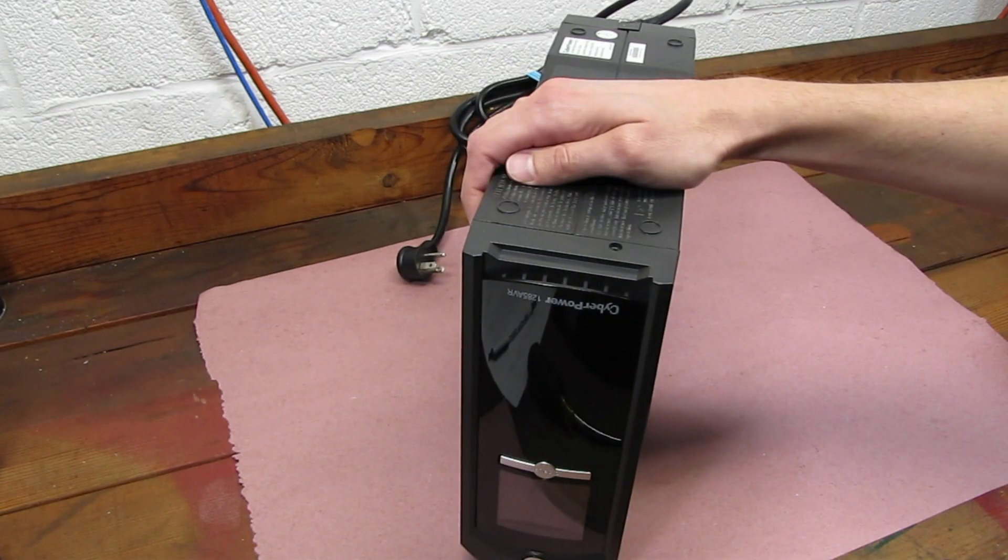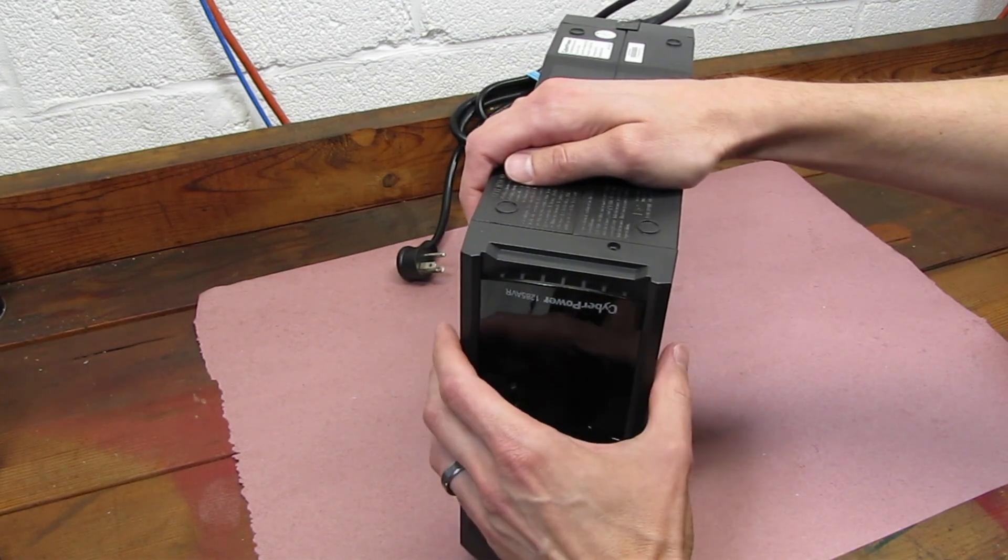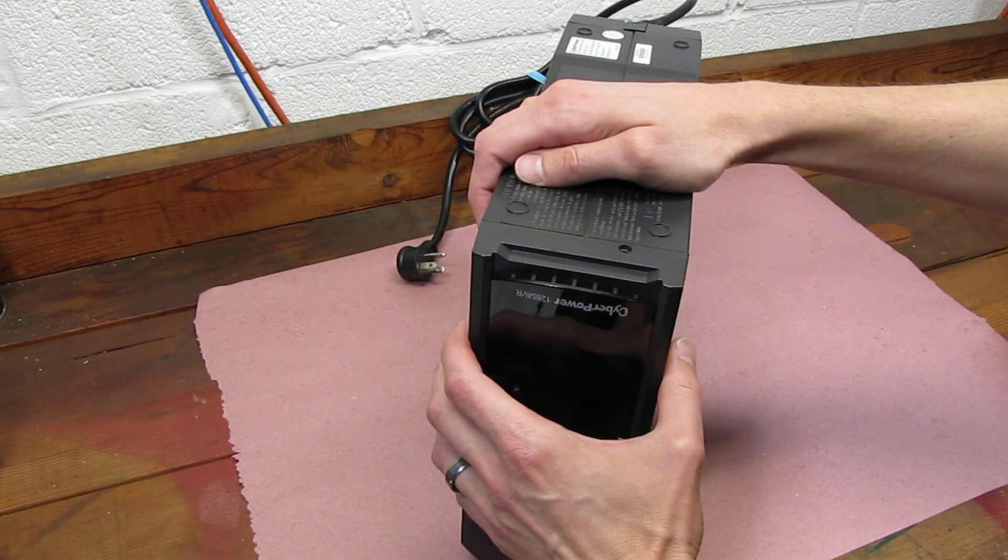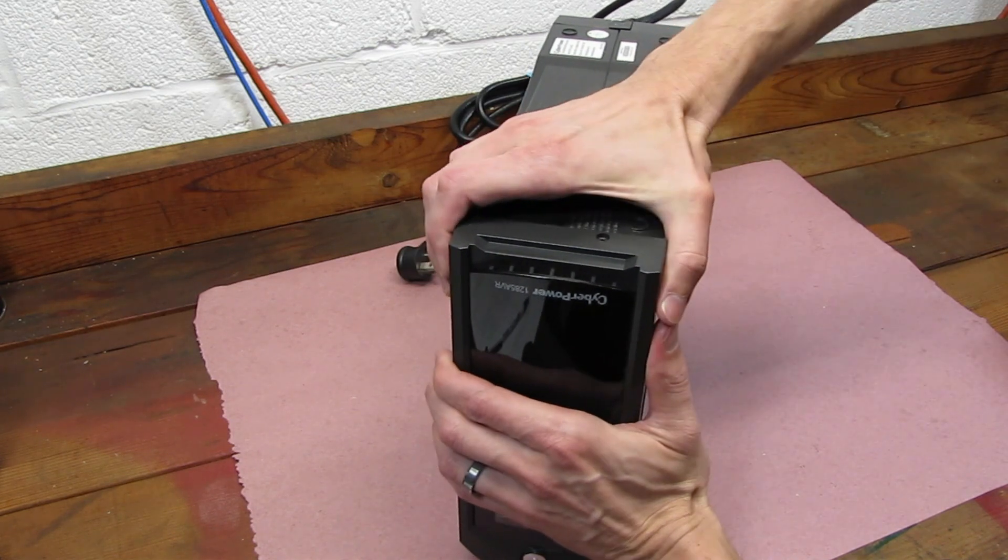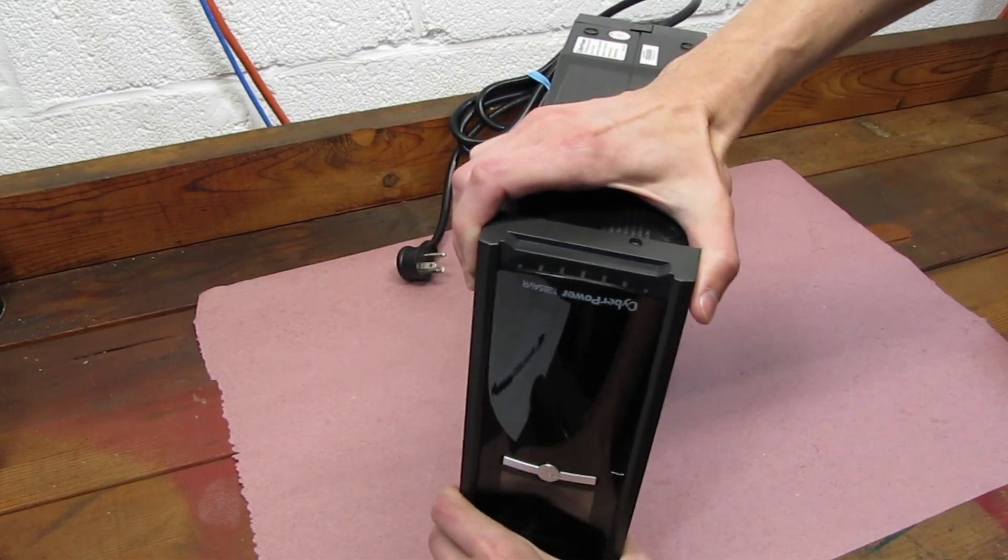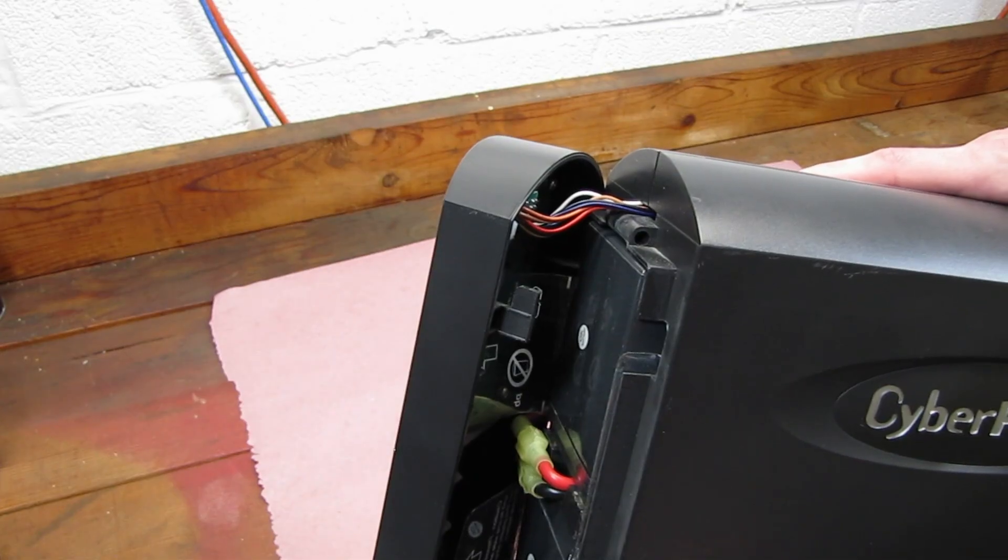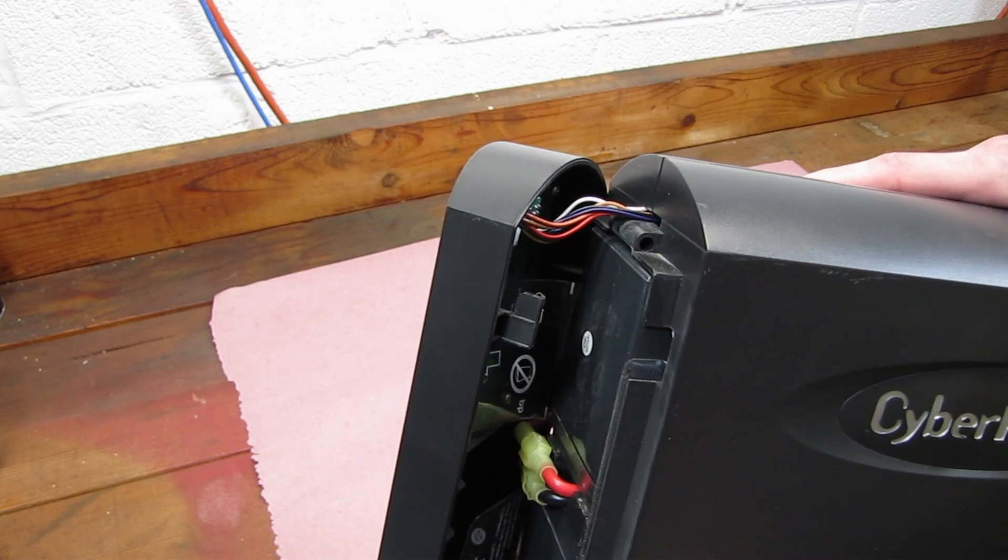To remove the front of the unit, you want to lift up on this panel. It may take some force. It will then pull outwards. Now we can turn it back over. I should have warned you at the beginning that these are heavy.